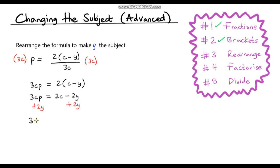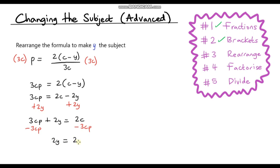On the left hand side we've got 3cp plus 2y, and on the right hand side these two terms cancel so we're just left with 2c. We've got the y's on the left hand side. Let's get rid of the 3cp so we're just left with y terms. We subtract 3cp from both sides, leaving us with 2y equals 2c minus 3cp. Notice we don't need to factorise — the reason is because we've only got one instance of y. This question only had one y to begin with.